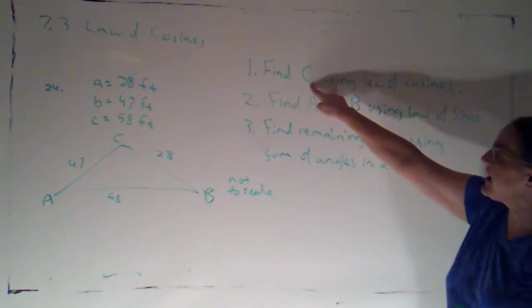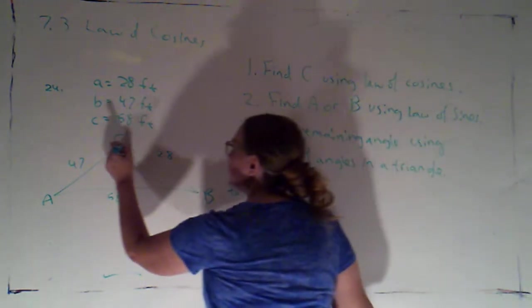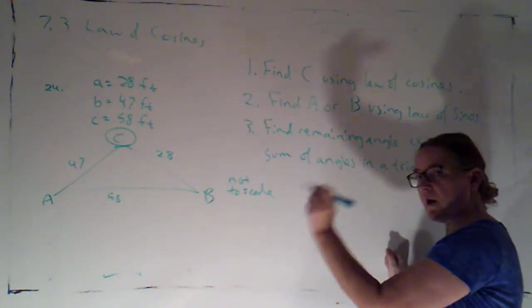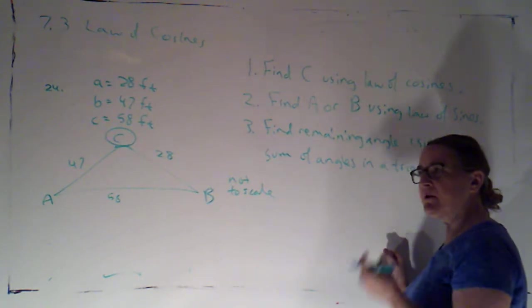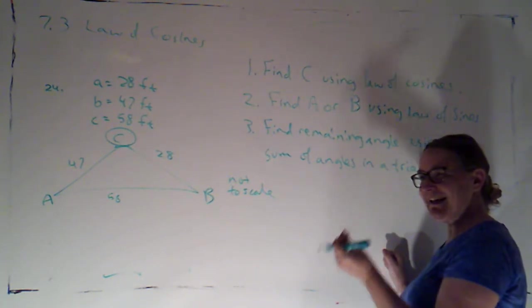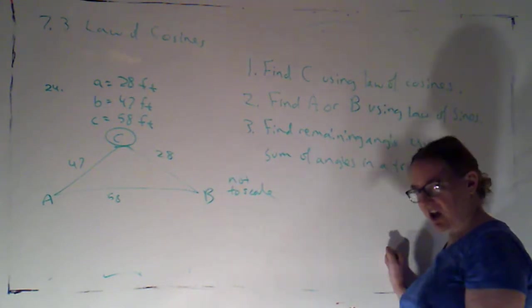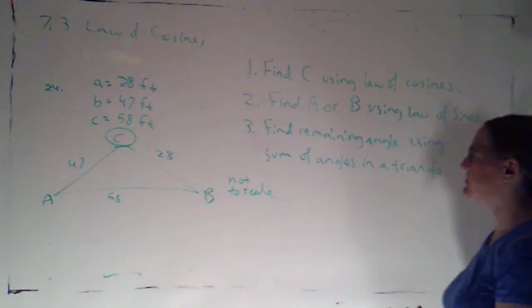Alright. So first thing I'm going to do is find angle C using the law of cosines. It is significant that I am finding angle C first because I know that's the biggest one. I want to find the biggest one first using the law of cosines. Because remember, knowing the sine of an angle isn't enough for me to know whether it's acute or obtuse, but knowing the cosine of an angle is enough for me to know whether it's acute or obtuse.